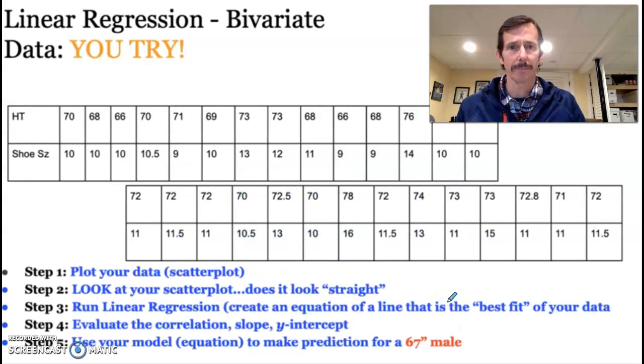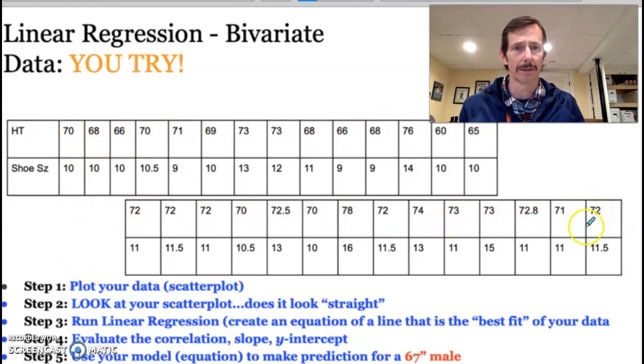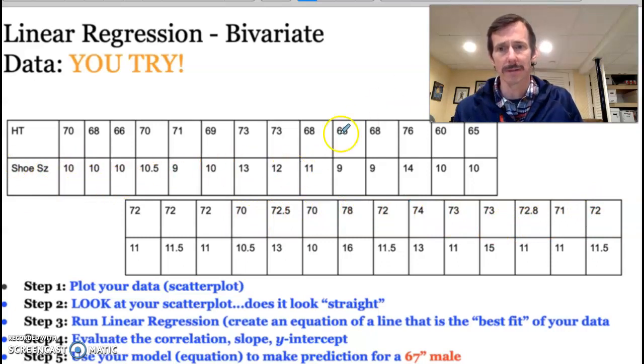So here is your data, and I will move it so you can actually see it. There you go. Now you can see it, and you're going to pause the video, and you're going to put all that data into your calculator. And again, I had to split this into two. This is list one, and guess what? This continues to be list one. These are list two. These continue to be list two. So the thing to keep in mind, this is paired data. So right next to the 70 has to be that 10. Next to the 68 has to be that 10. So these have to be right next to each other in your calculator, and you have to have the same number of pieces of data, or you'll get a dimension mismatch.